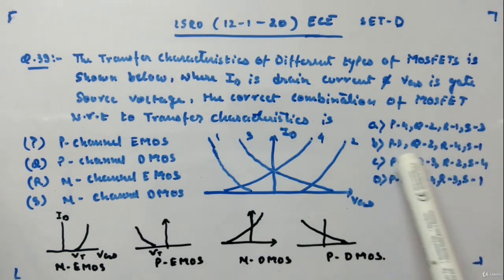Options are: P4 Q2 R1 S3, P3 Q2 R4 S1, P1 Q3 R2 S4, P2 Q4 R3 S1. Okay, so as a solution, this is a theoretical question, so most of the students might be knowing this. So this is N channel EMOS.